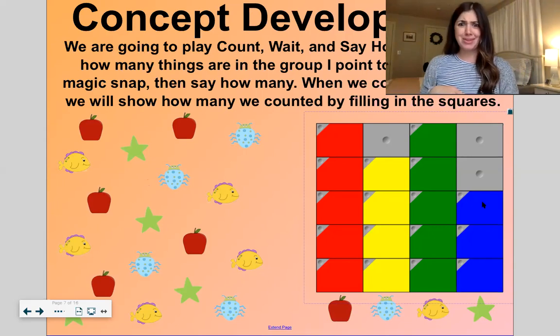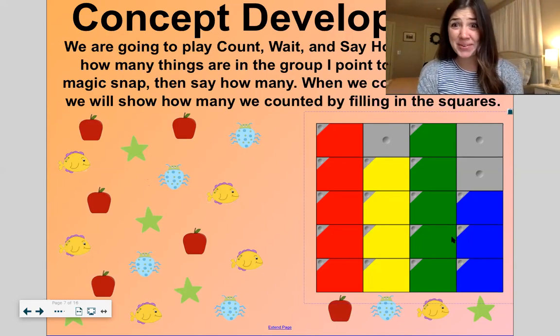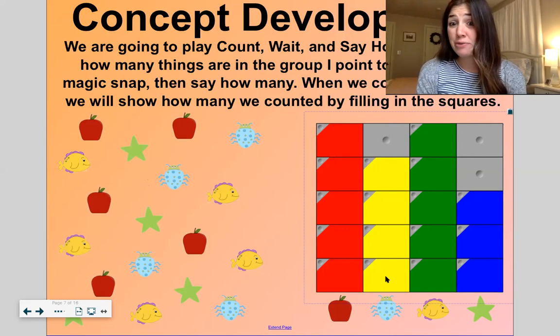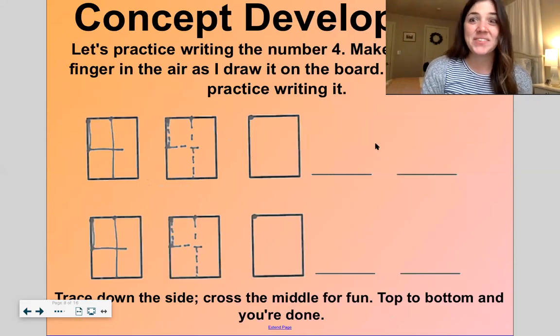So what did we have the most of? Looking at this graph, it's easy to tell, right? This graph tells me how many I have and I can see that there are the same amount of apples and fish. That's the same number. Then we have four beetles and we have the least amount of stars. Good work.